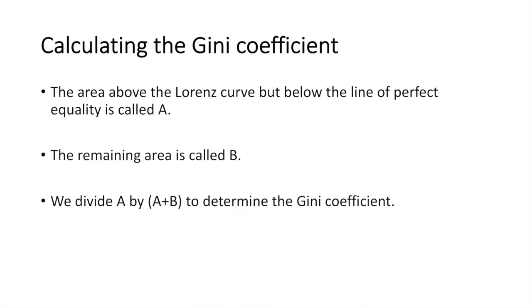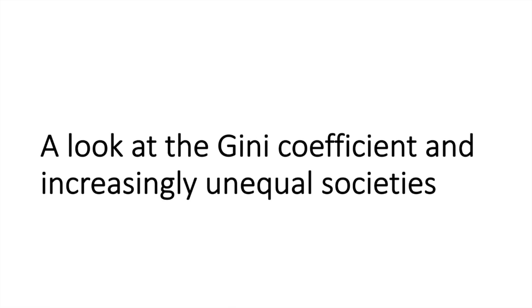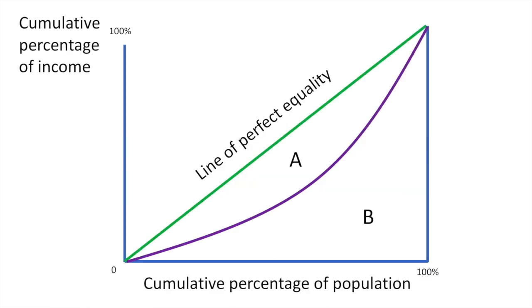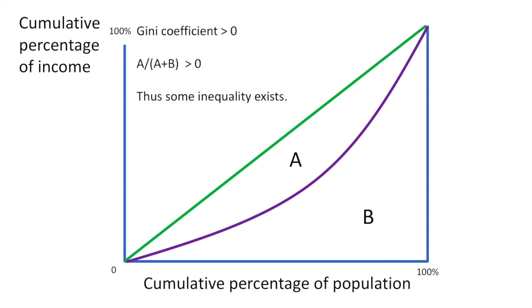Let me demonstrate how we do this. We'll use the case of the Lorenz curve in increasingly unequal societies to demonstrate how the Gini coefficient is calculated. The line of perfect equality does not represent this economy's distribution of income. Instead, it is represented by the purple Lorenz curve. The area above the Lorenz curve is measured by area A, whereas below is measured by area B. We divide the area of A by the total area under the line of perfect equality to arrive at our Gini coefficient, which in this case will be greater than 0.